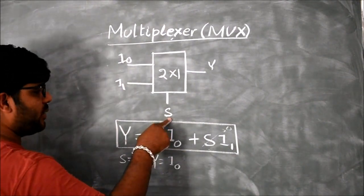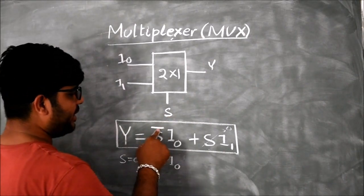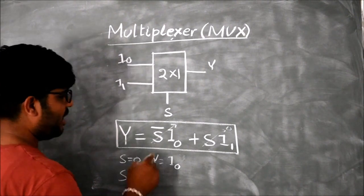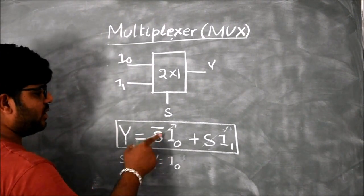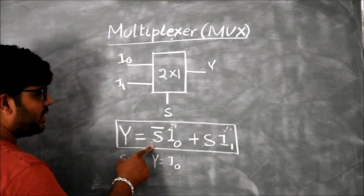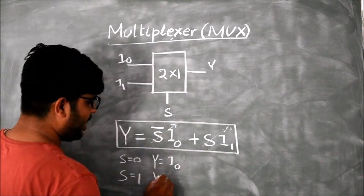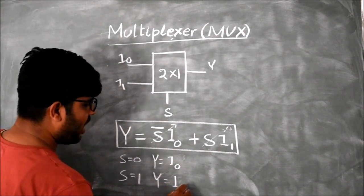When S is equal to 1, 1 complement is 0. This term vanishes. When S is equal to 1, 1 complement is 0, 0 into something is 0, this term vanishes. And 1 into I1 is equal to I1, so Y is equal to I1.